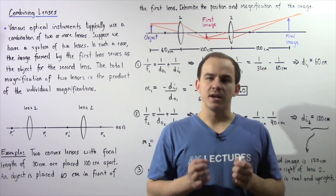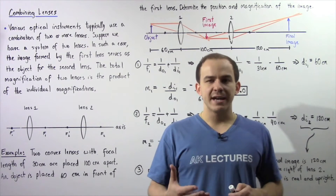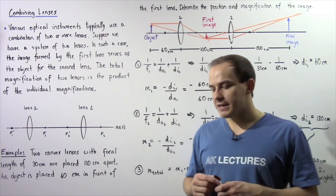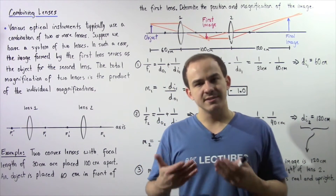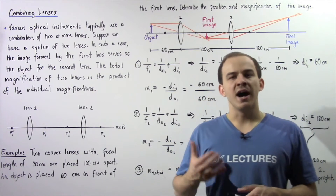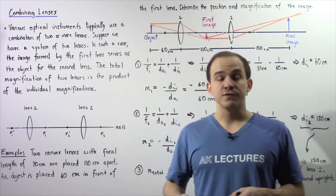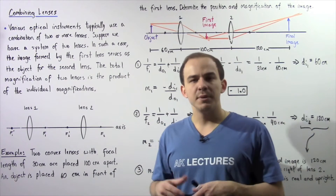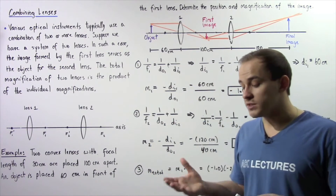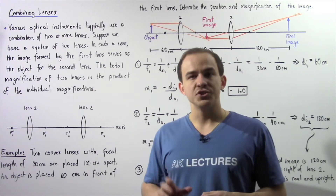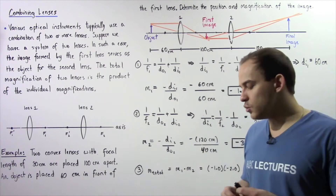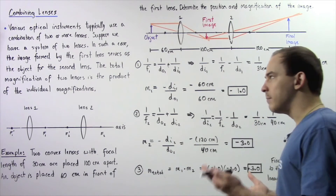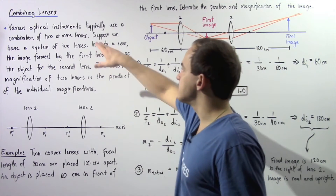In this lecture, we're going to discuss combining our convex and concave lenses. Many different types of optical instruments exist that use a combination of lenses. Various optical instruments typically use a combination of two or more lenses.